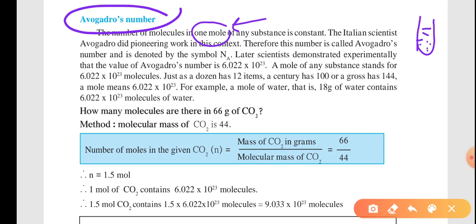One mole has a constant size — the glass size is always the same. A scientist named Avogadro found out how many atoms fit in one mole. He discovered that 6.022 × 10²³ atoms or molecules are present in one mole of any substance.